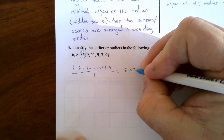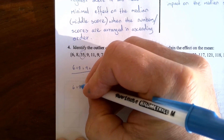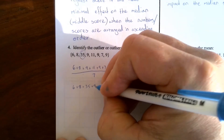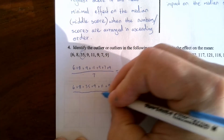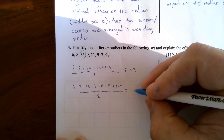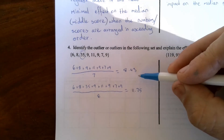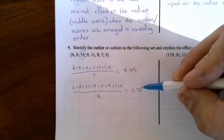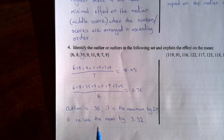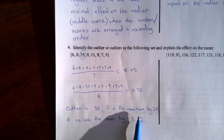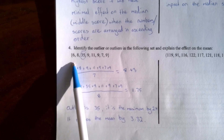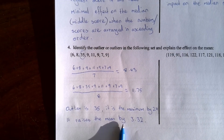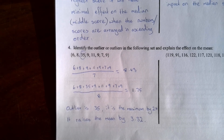Without the outlier the mean is 8.43. Including 35 in the data — 6 + 8 + 35 + 9 + 11 + 9 + 7 + 9 divided by 8 — gives a mean of 11.75. So the outlier 35, being about 24 larger than any other number, raises the mean by 3.32. This is a case where using the median instead of the mean would have been better.